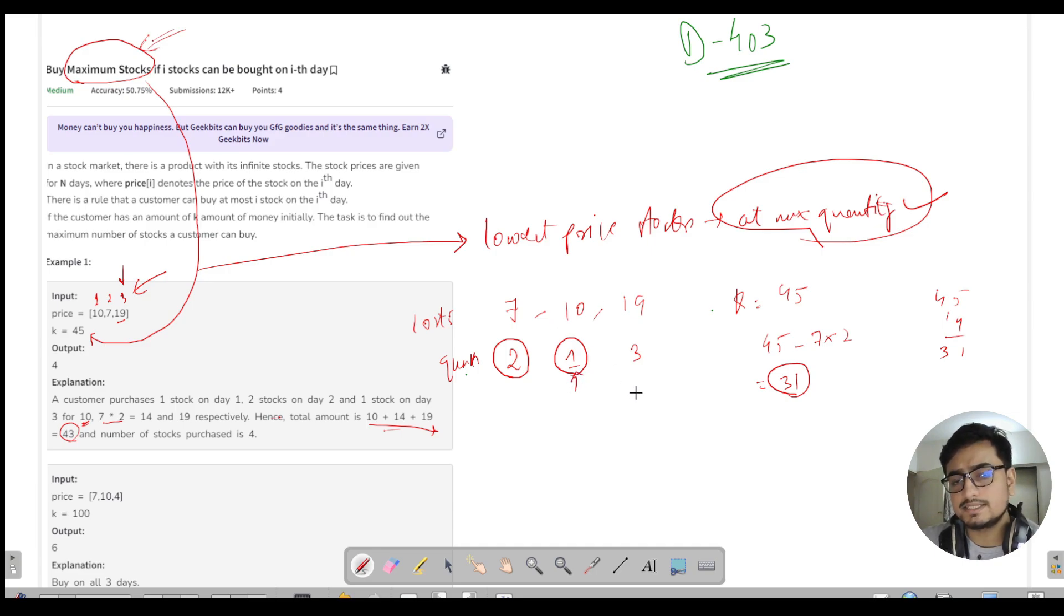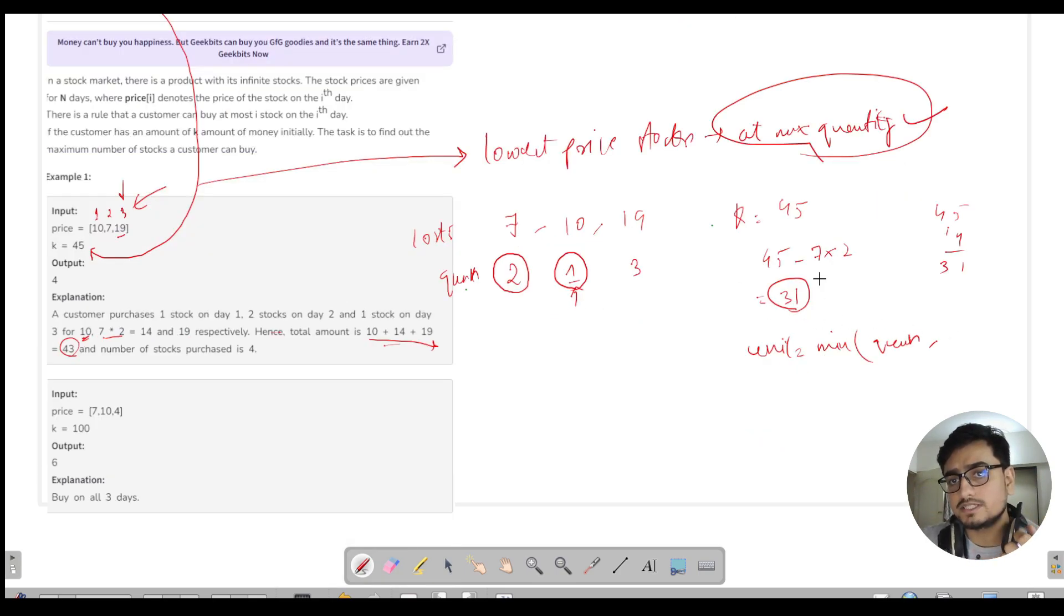You need to compare and take the minimum of the quantity given to you with the maximum amount you can purchase with the given money. I have 31, I'll divide it by the price. Here I'm finding minimum of 1 and 31 divided by 10, which is minimum of 1 and 2, which is 1. That's how we're deciding which way to go.